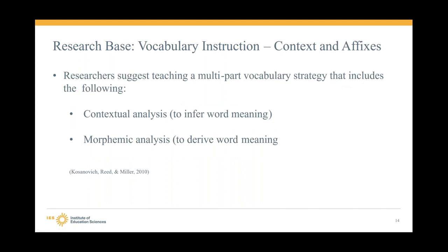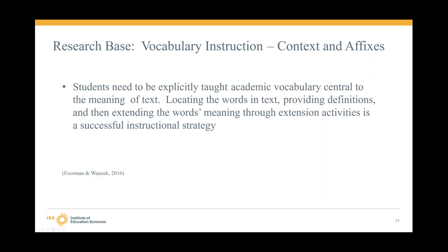Research shows the benefit of both contextual analysis — inferring word meaning from context as I just walked through — and morphemic analysis, breaking down word parts like ophthalmos and -ology. There's a lot of benefit to doing both with words when we can. Students need to be explicitly taught academic vocabulary central to the meaning of the text. Locating words in the text, providing definitions, and extending meaning through discussion or extension activities are all really helpful at increasing vocabulary.